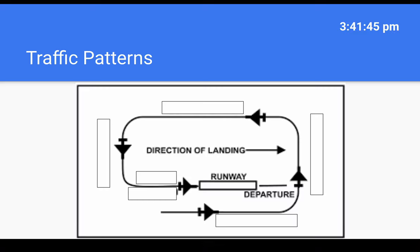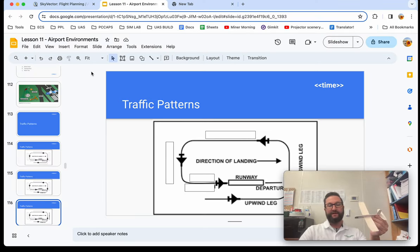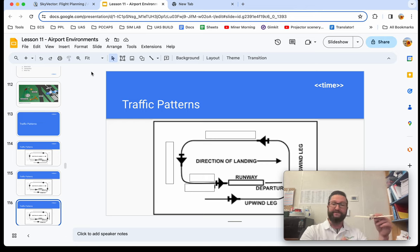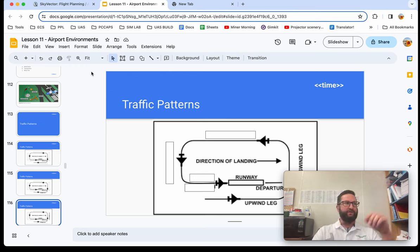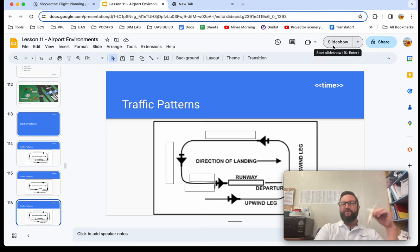Next, traffic patterns — something you'll need to memorize. When we depart, that's called the upwind leg. Turning left from upwind is the crosswind leg. Pilots often say the direction of turn before the leg name, so it becomes 'left crosswind' because we're turning left in the pattern. The standard pattern is a left pattern, but airports can have right patterns, which you can find on sectional charts and in chart supplements. There are left patterns and right patterns at airports — perhaps a hospital nearby necessitates a right pattern.